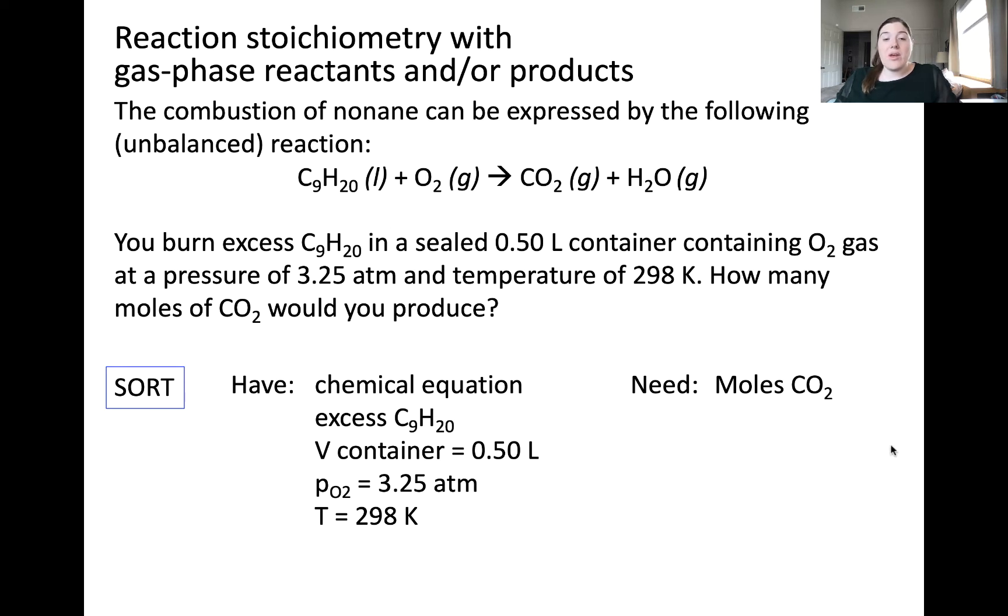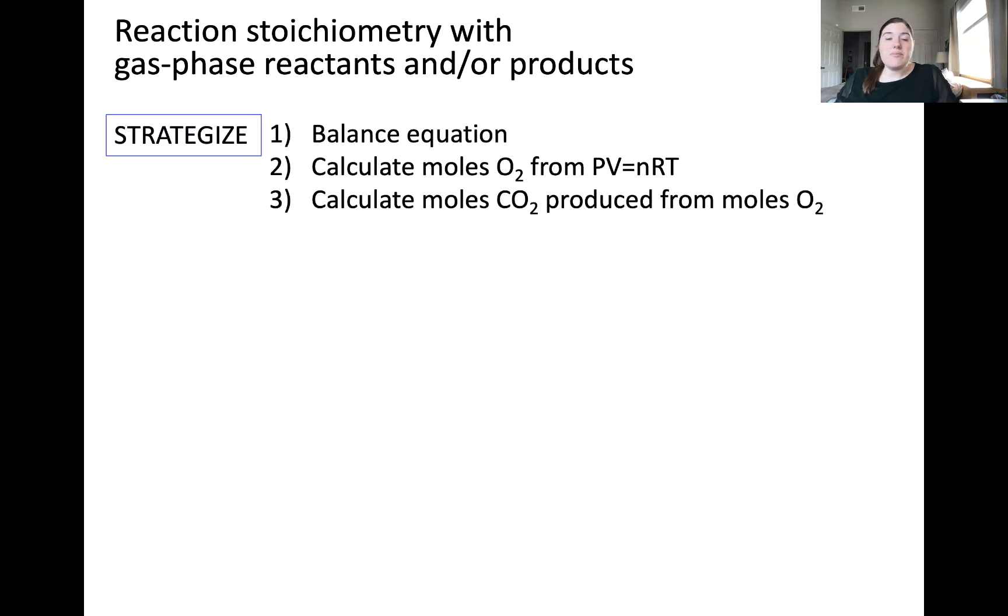We know that we have excess nonane, one of our reactants. We know the volume of the container, the pressure of oxygen in the container, and the temperature. What we need are how many moles of CO2 will be produced given these reaction conditions. Our strategy will be to first balance the chemical equation because we know that any time we're doing a stoichiometry problem and we need the multiple ratio, a balanced equation is a must.